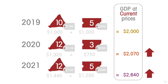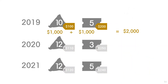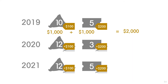One solution is that if we can't distinguish between changes in volume and changes in prices, then we can calculate GDP by pretending that the prices haven't changed. We evaluate 2019 at 2019 prices, but when we get to 2020 we ignore the price changes and use the same prices that obtained in 2019, and similarly for 2021.